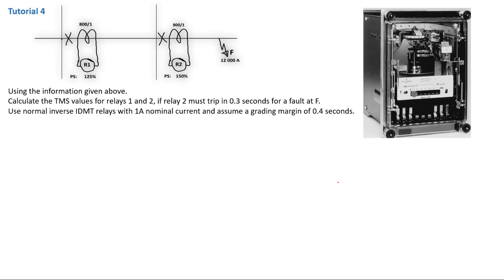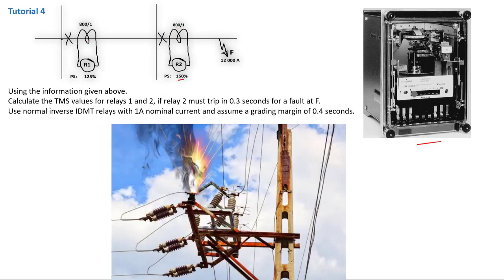Hey guys, welcome back to SimTech channel. This is tutorial 4 on our series on IDMT relay calculations, as you can see on your screen. Using information given: we have a fault of 12,000 amps, relay 2 near the fault with a CT ratio of 800/1 and plug setting of 150%, and relay 1 with the same CT ratio and a plug setting of 125%. Please watch my previous tutorials to familiarize yourself with plug settings and other relevant IDMT relay parameters.